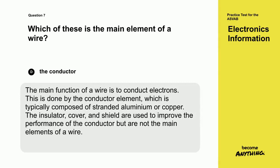The main function of a wire is to conduct electrons. This is done by the conductor element, which is typically composed of stranded aluminum or copper. The insulator, cover, and shield are used to improve the performance of the conductor, but are not the main elements of a wire.